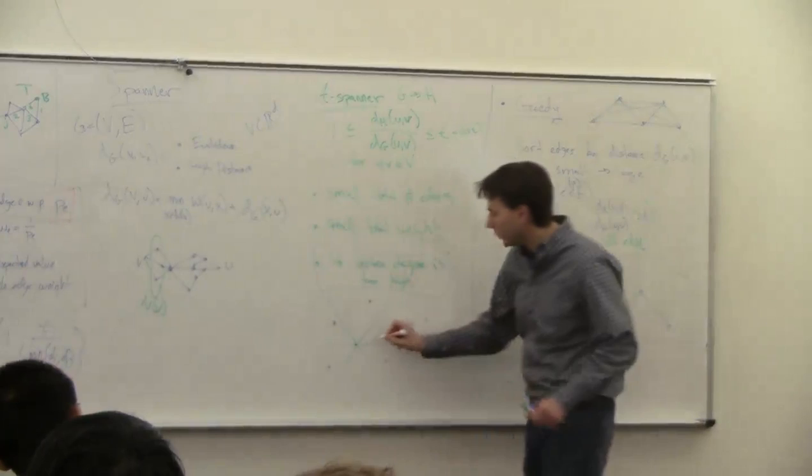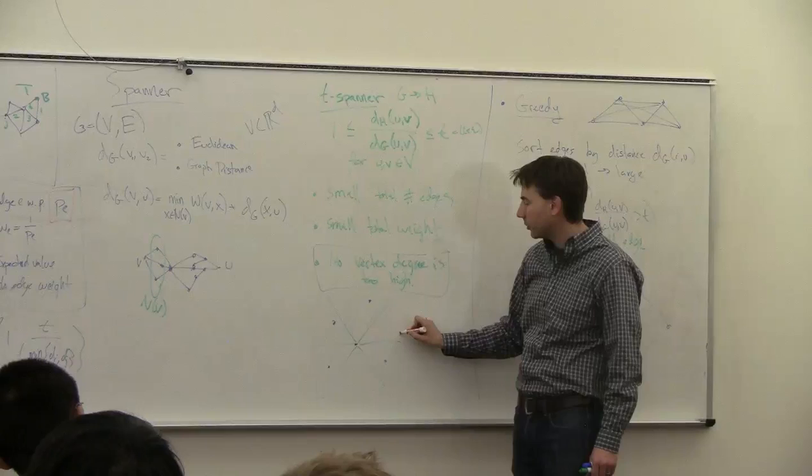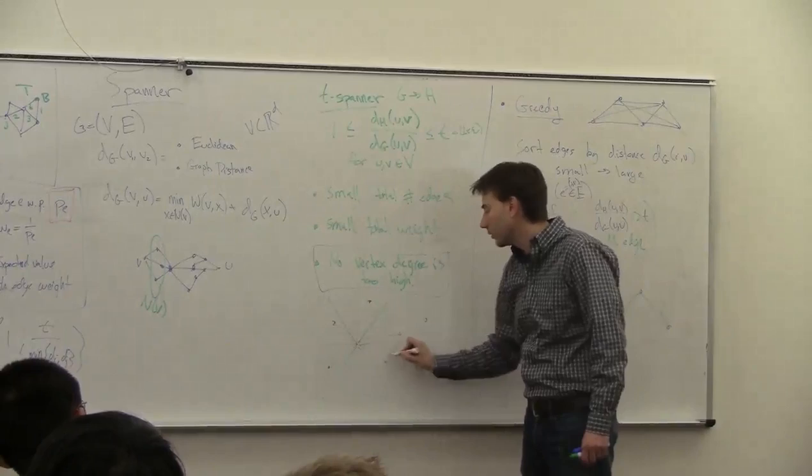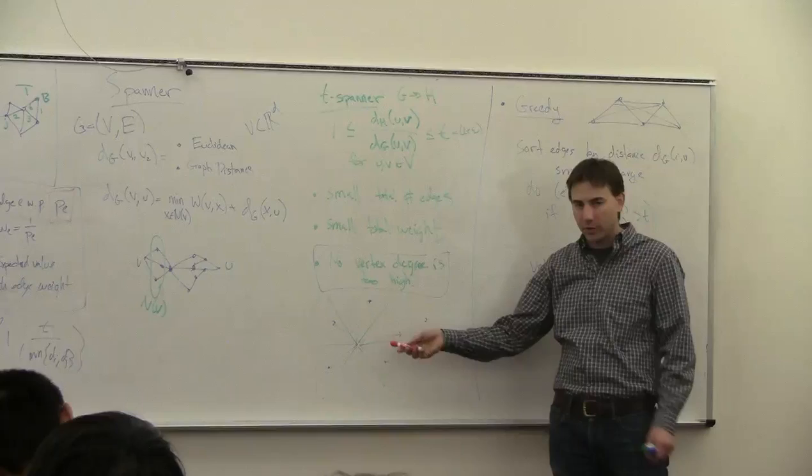Or actually, what I'm going to do is I'm going to project onto some line through the middle here and look at the closest projection. So I'm going to add edges here. And I'm going to do this for every one of the points. So each point is going to have at most six vertices.